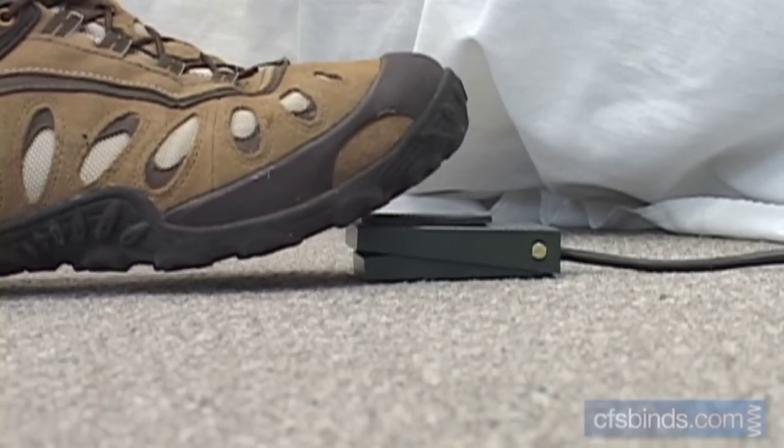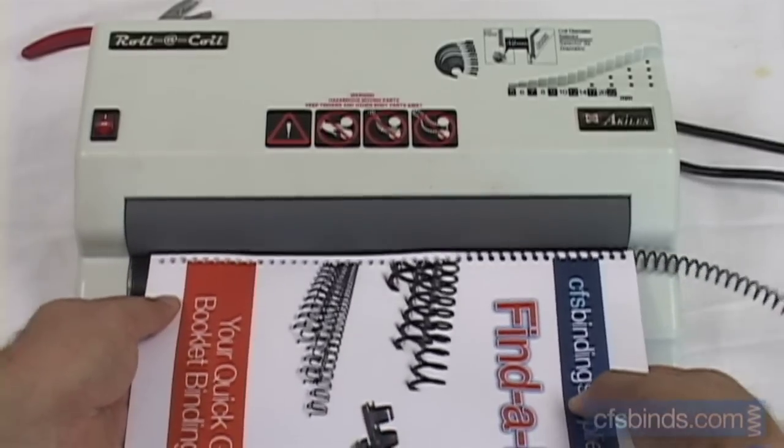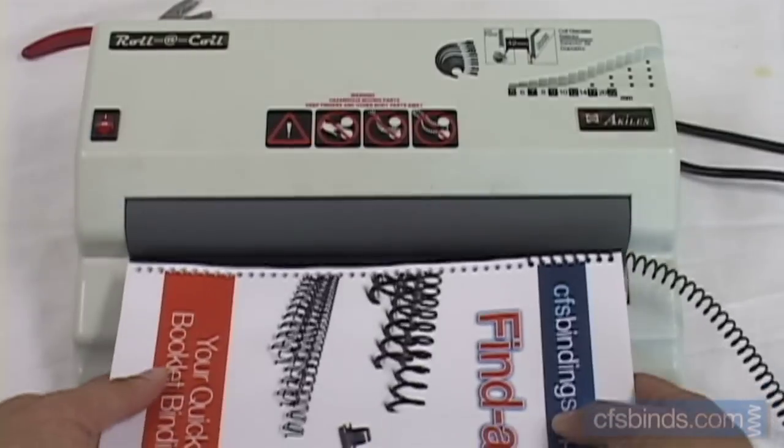Step on the foot pedal to start the inserter roller spinning. Then with slight pressure, push the coil against the roller to spin it through the book.